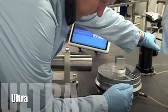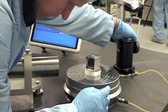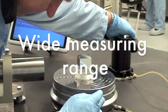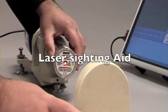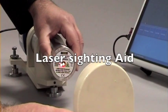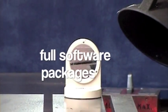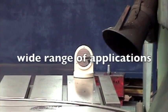Ultra digital dual axis autocollimator features include its wide measuring range, simple to use laser sighting aid, built-in full software package, and wide range of applications.